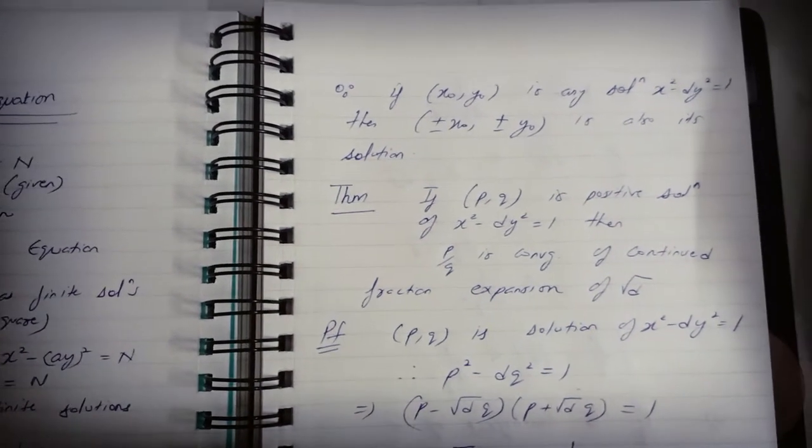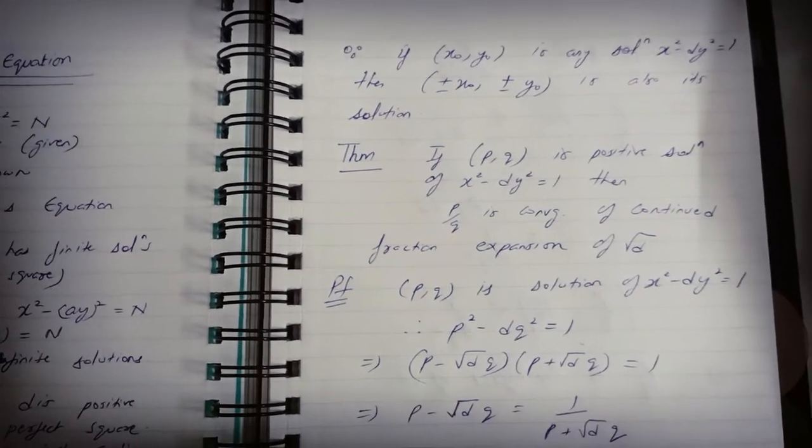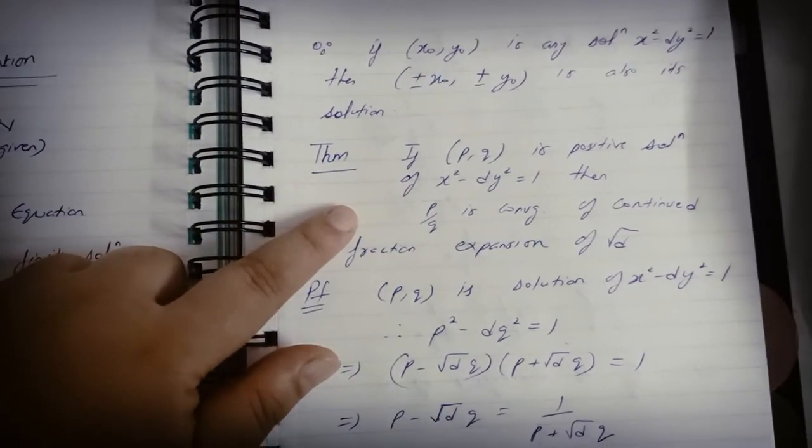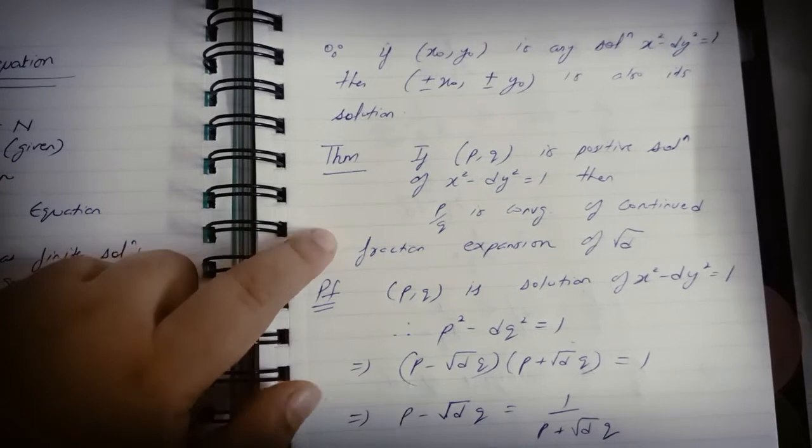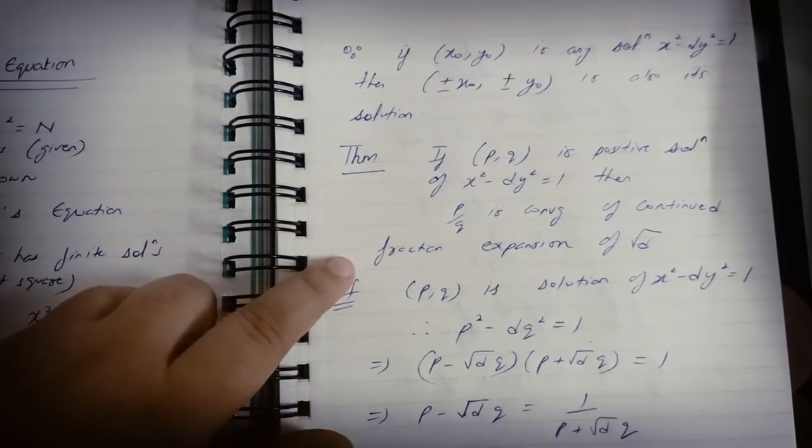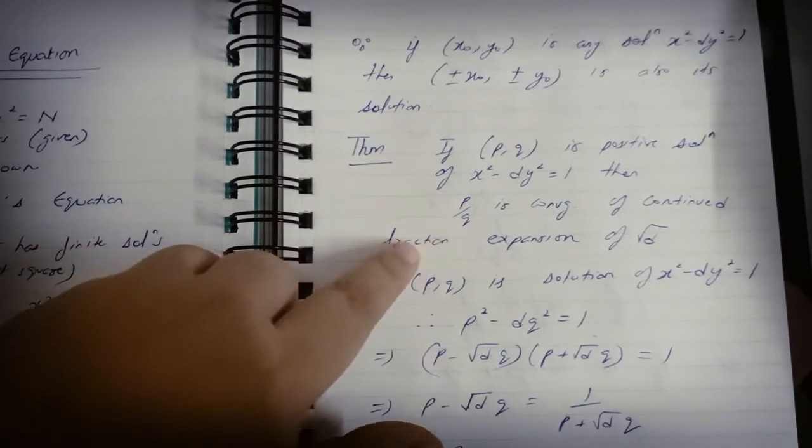Now the first result in this section says: if (p, q) is any positive solution of this Pell's equation, then p/q is a convergent of the continued fraction expansion of √d. So it occurs somewhere in the expansion of √d.